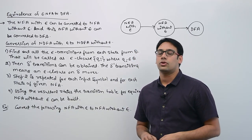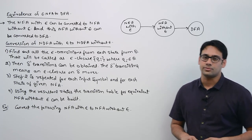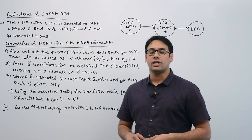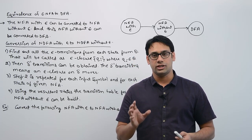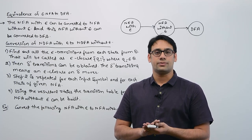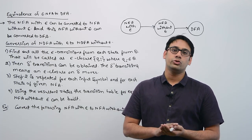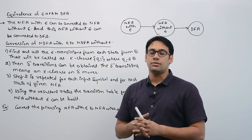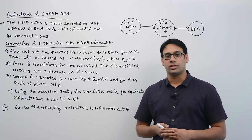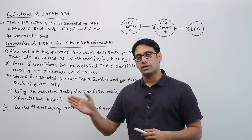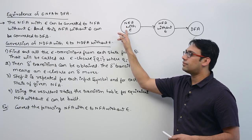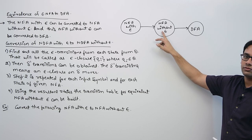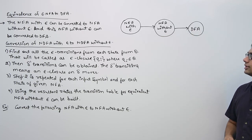Now let us see how to convert an Epsilon NFA to NFA. Epsilon NFA means the NFA with the Epsilon transition. To convert an Epsilon NFA to NFA, first you need to know what is the Epsilon closure, and then we use that Epsilon closure to do the conversion. The procedure is: we have an Epsilon NFA with Epsilon move, then we convert it to an NFA without Epsilon move, and then we convert that to a DFA.